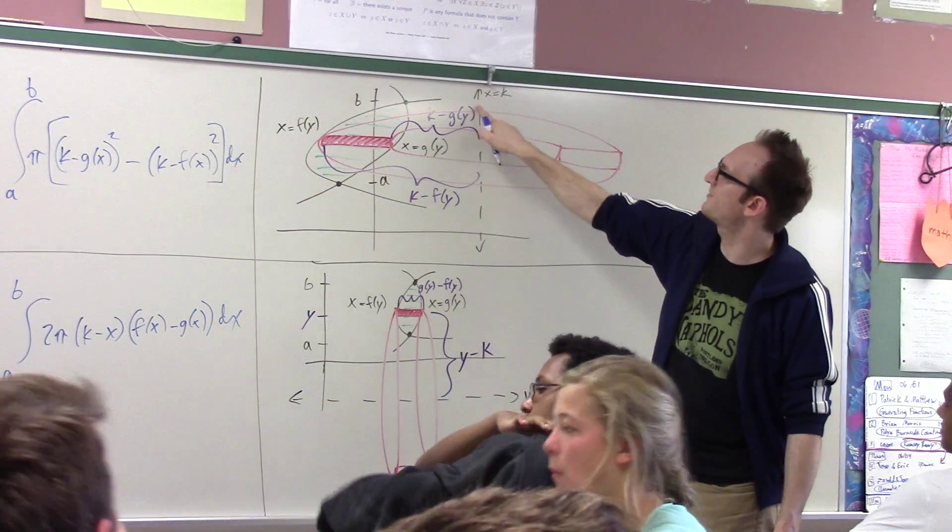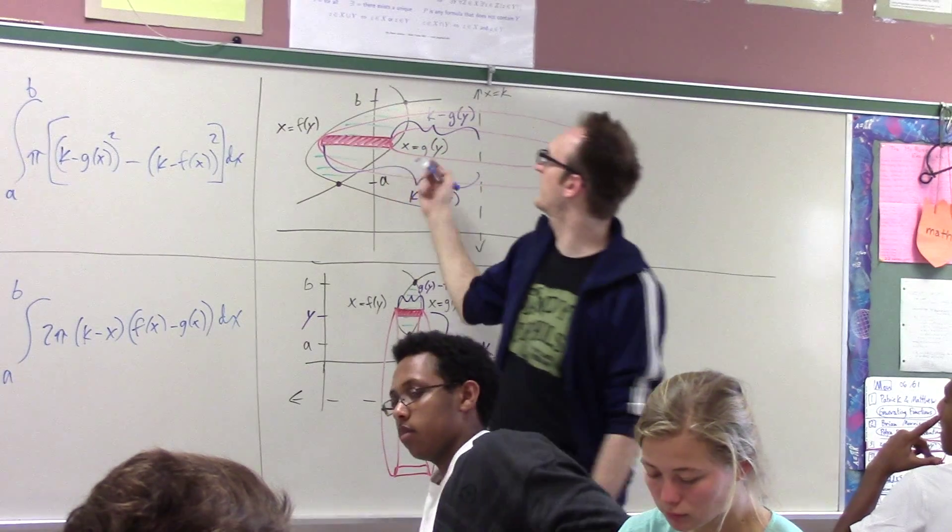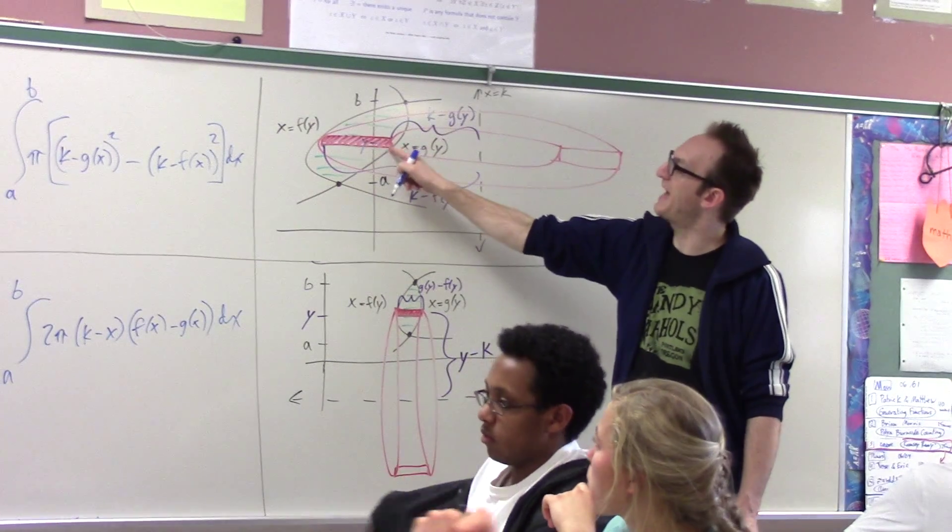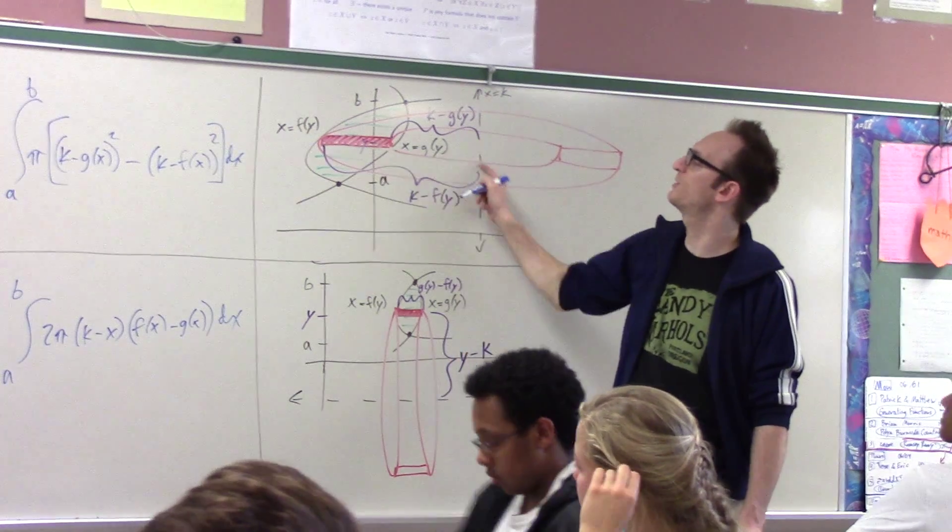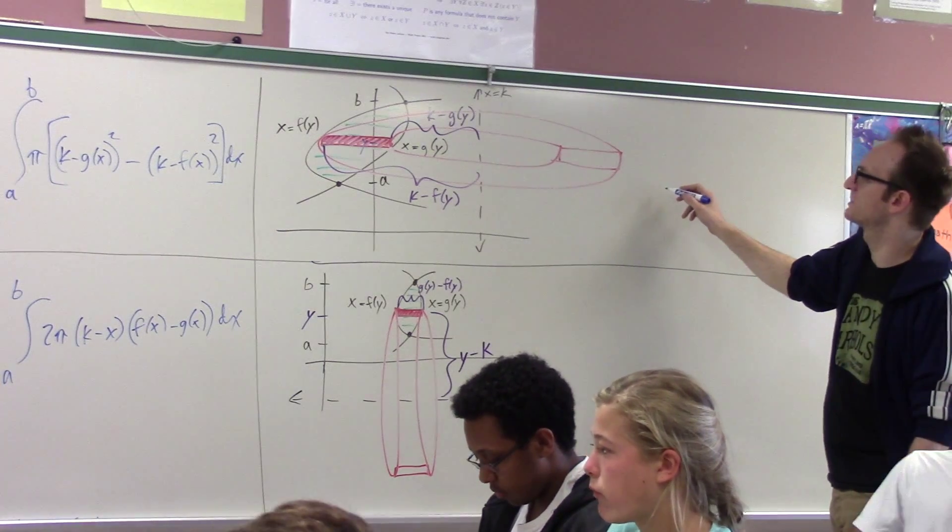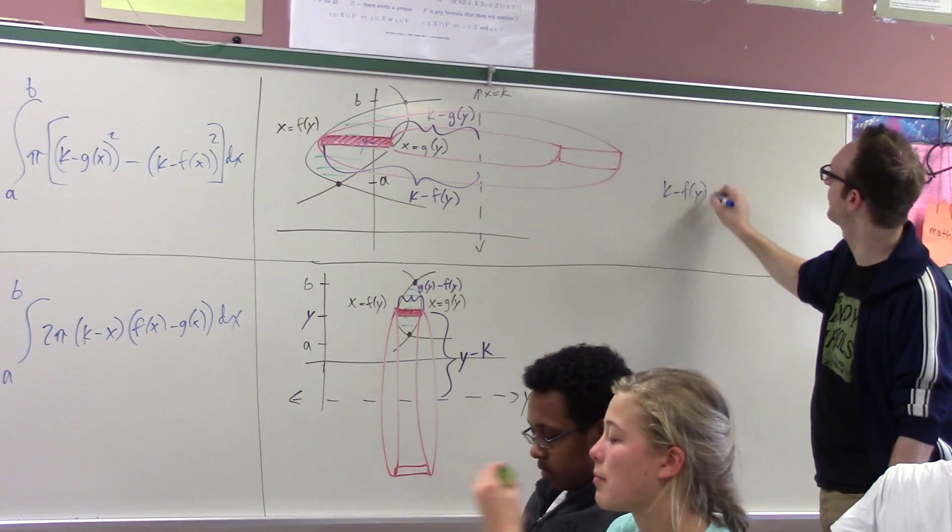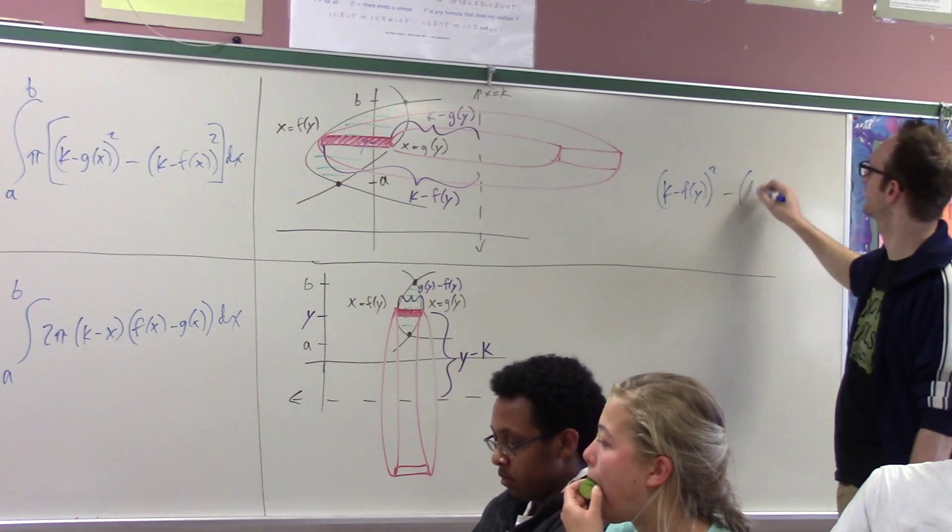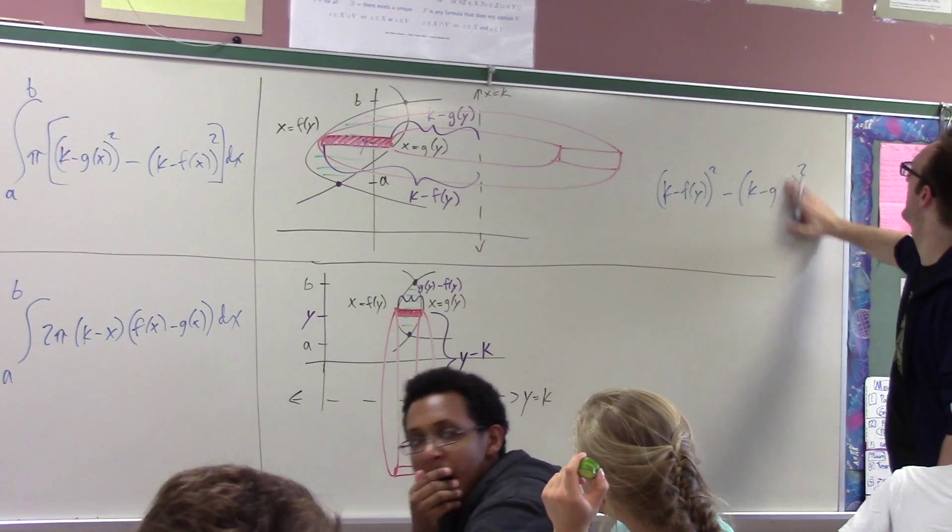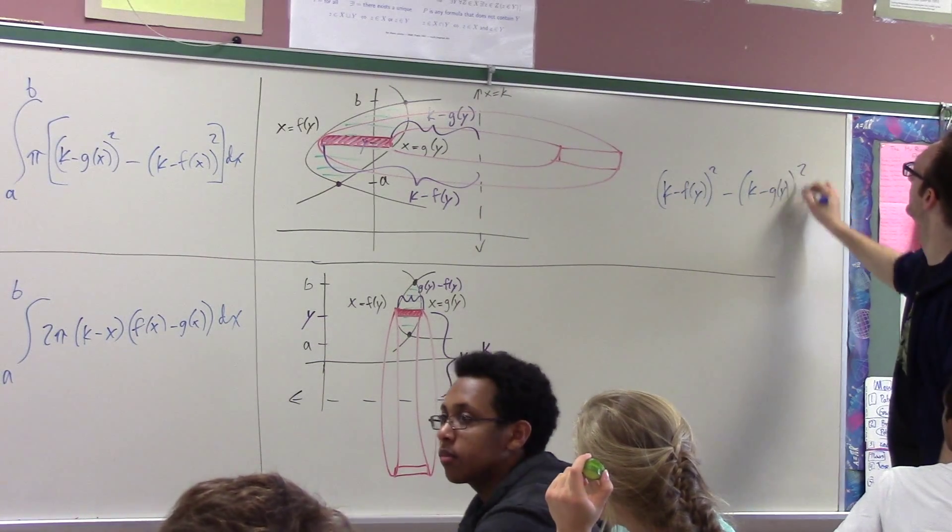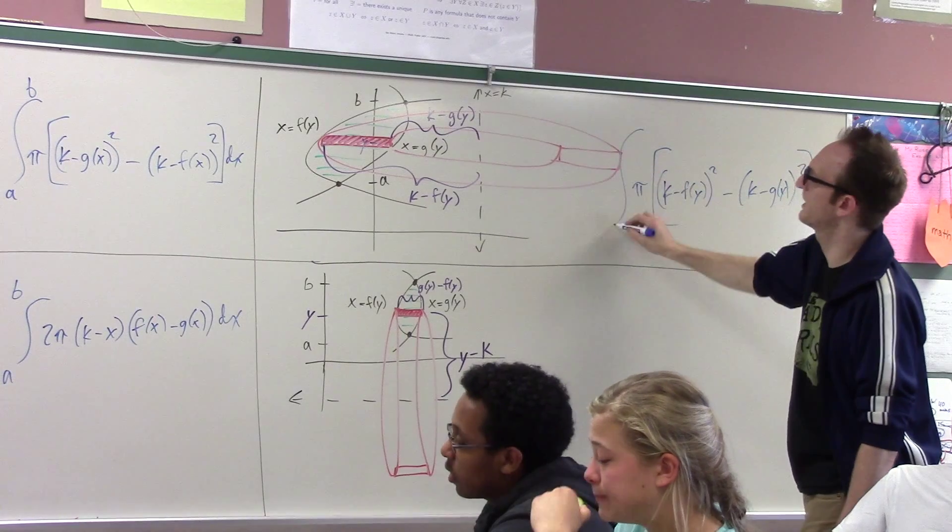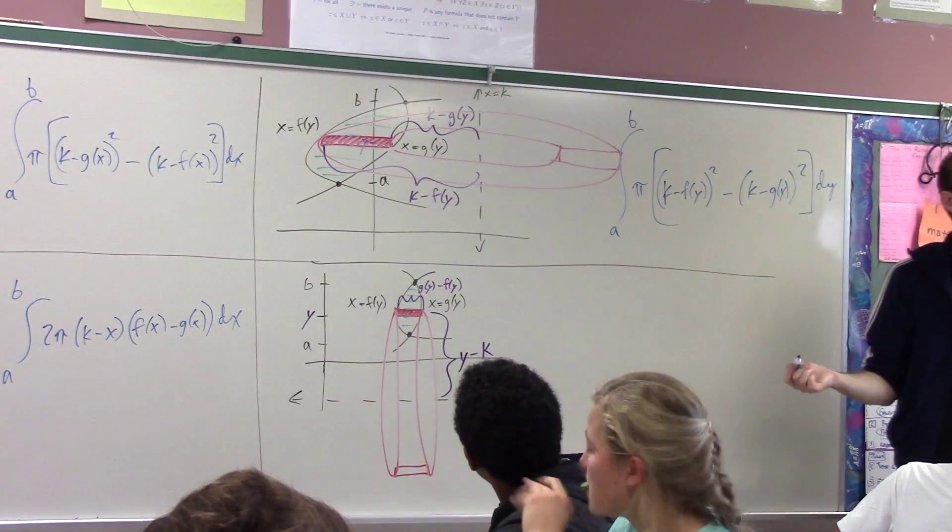So, if this x value is k, k minus g(y), for an arbitrarily chosen y value along the y axis, g(y) is that x coordinate. And k minus g(y) will then be the inner radius, and k minus f(y) will be the outer radius. So, this is outer radius k minus f(y) squared minus k minus g(y) squared. And that whole thing is going to be multiplied by dy and also pi, and we integrate up the y axis from a to b. You guys getting all right? Okay. Okay, good.